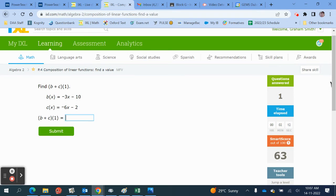We need to find b of c of 1. So, again, on the right-hand side is c. So, this is where we start. We find c of 1.